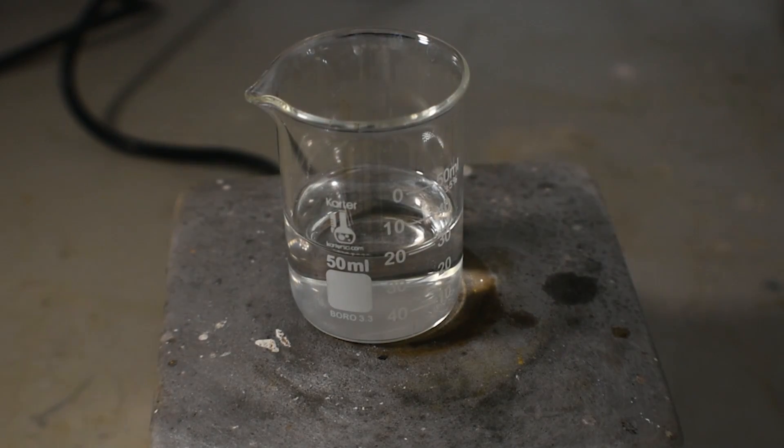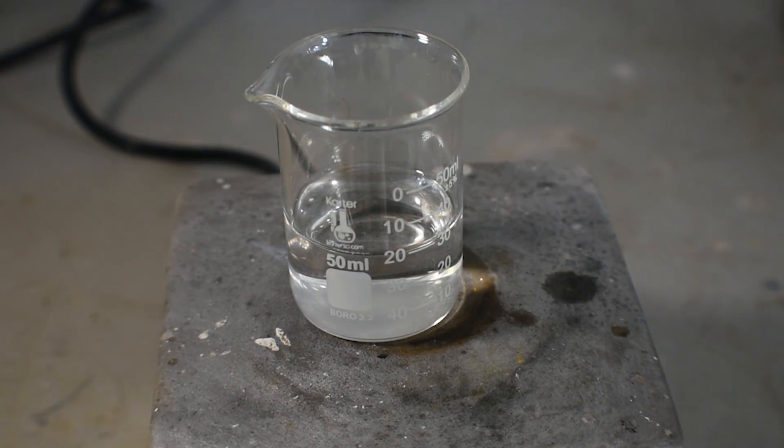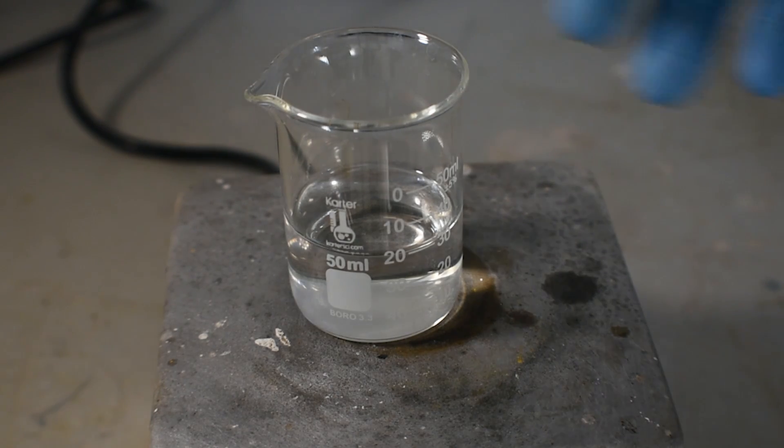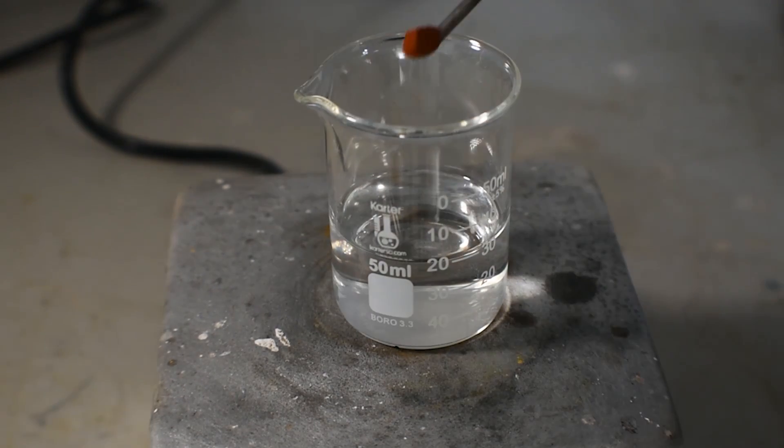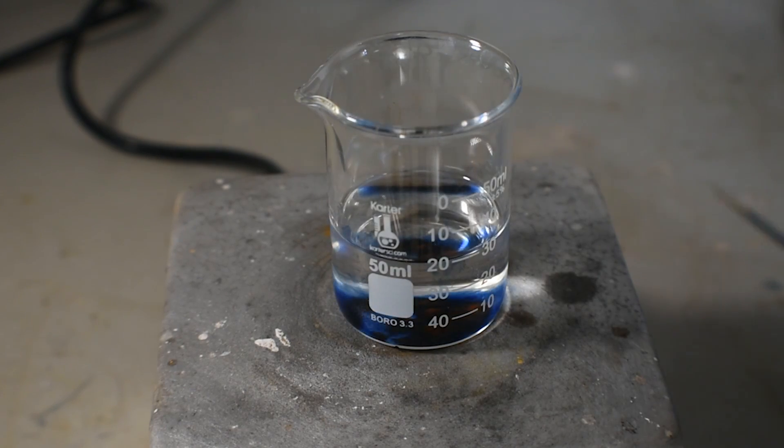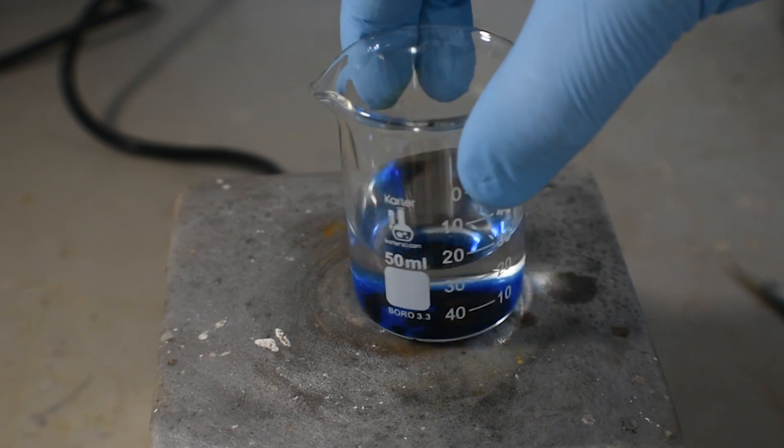The second test I'll do involves adding the salt to aqueous ammonia. My ammonia has a concentration of 10%. Upon addition, the solution turns a dark blue color, indicative of a copper-2 amine complex.